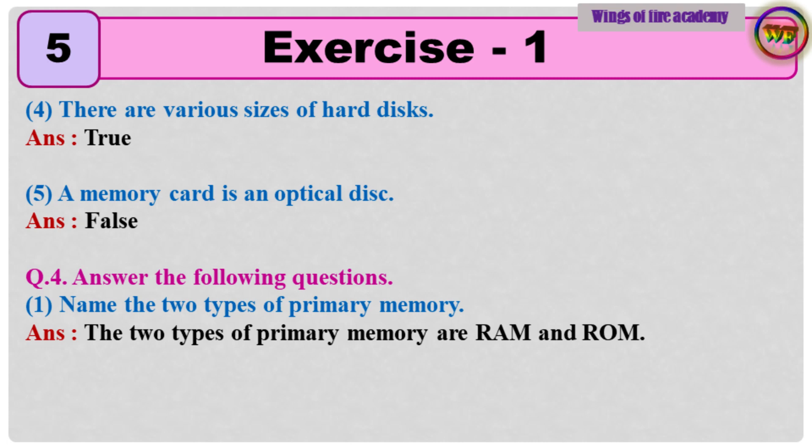Question number 4, answer the following questions. Question 1: Name the two types of primary memory. Answer: The two types of primary memory are RAM and ROM.